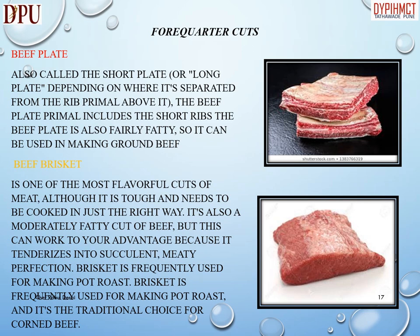Beef plate, also called the short plate or long plate depending on where it is separated from the rib primal above it, includes the short ribs. The beef plate is also fairly fatty, so it can be used in making ground beef. Beef brisket is one of the most flavorful cuts of meat, although it is tough and needs to be cooked in just the right way.